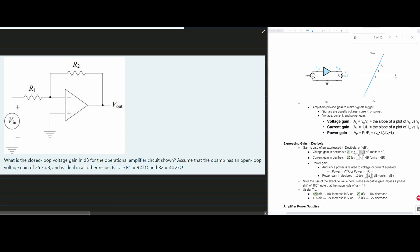We're asked what is the closed loop voltage gain in dB for the operational amplifier circuit shown? We need to assume that the op amp has an open loop voltage gain of 25.7 dB and is ideal in all other respects. And we have these two resistors here.